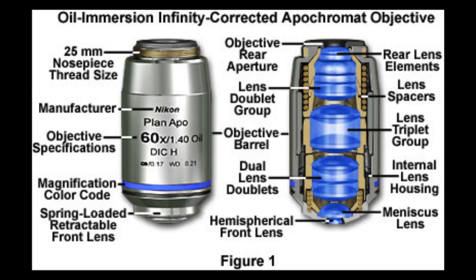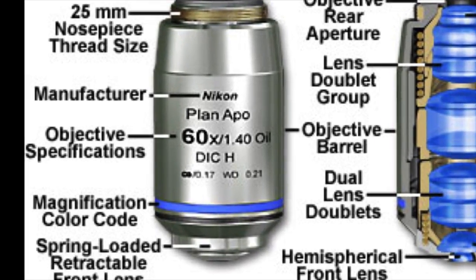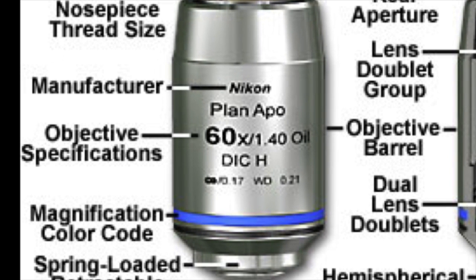The first thing you see on the objective — this one is a Nikon objective, but we'll be working with Leica objectives on our microscope. There's a description of the type of lens: plan apo, which we'll discuss again in a bit. More importantly, there is the magnification of the objective — here it's printed 60x or 60 power.